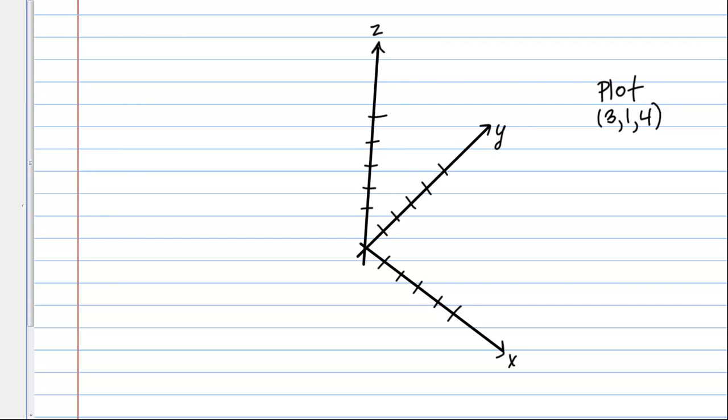So I have my XYZ coordinate plane here, and I'm just looking at the positive part of all these axes. My directions here are to plot the point (3, 1, 4). So let me show you how you might do this.